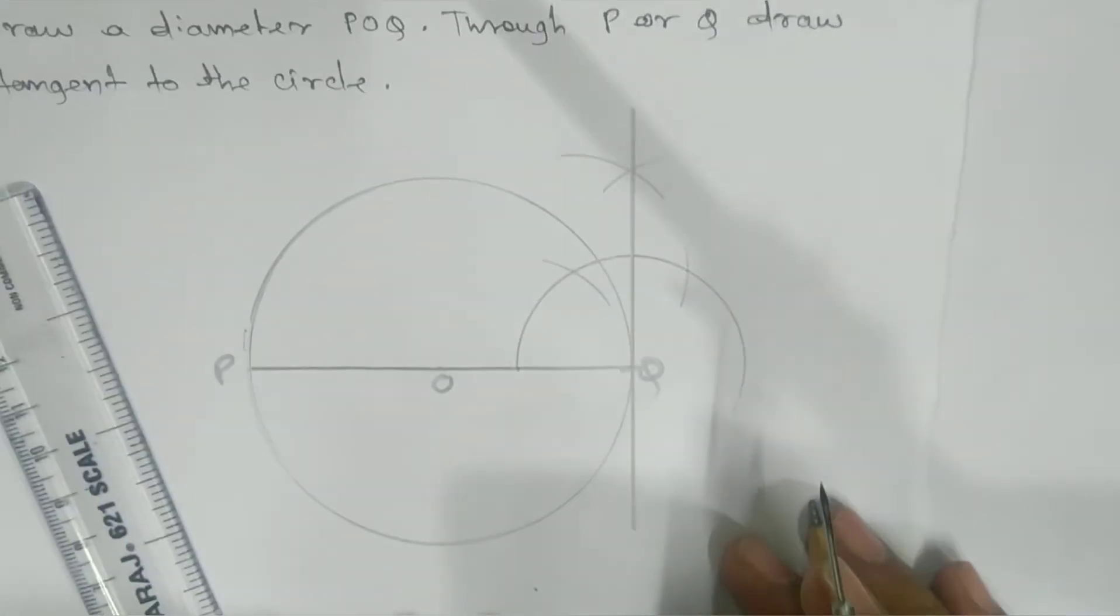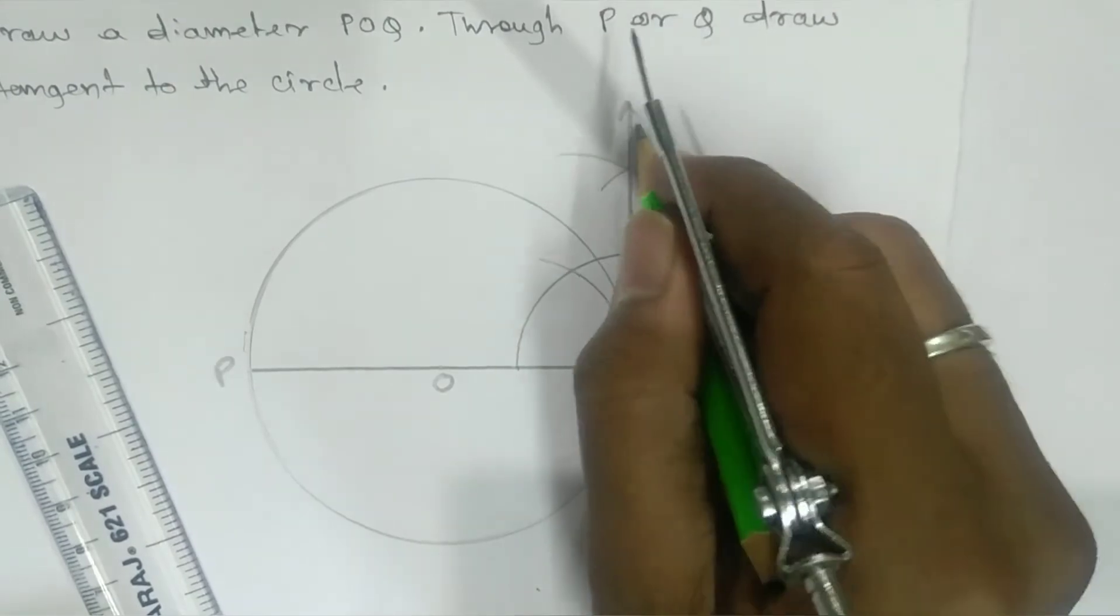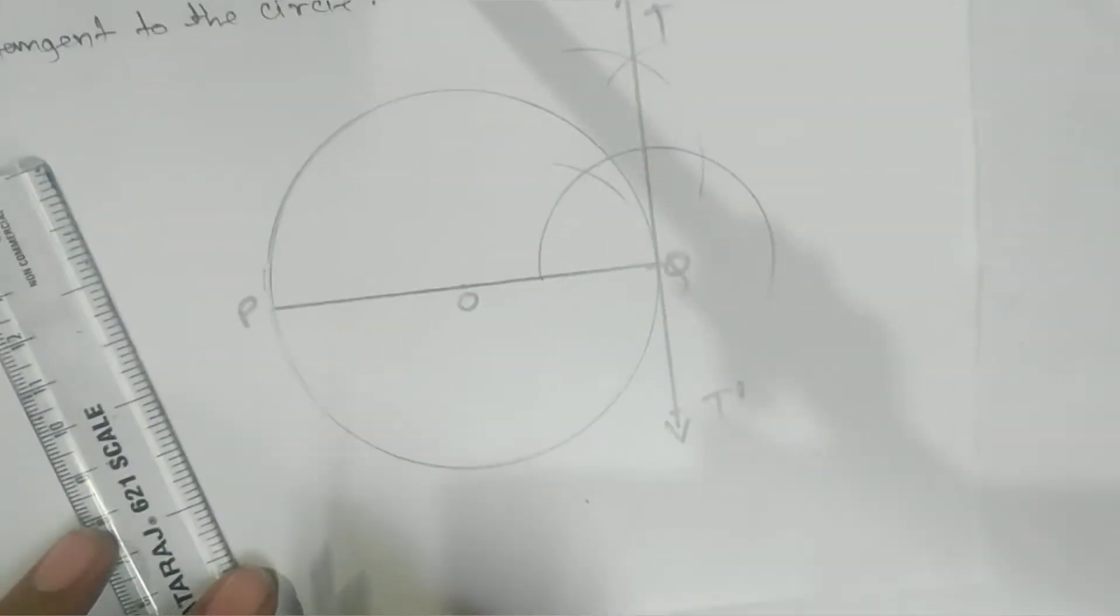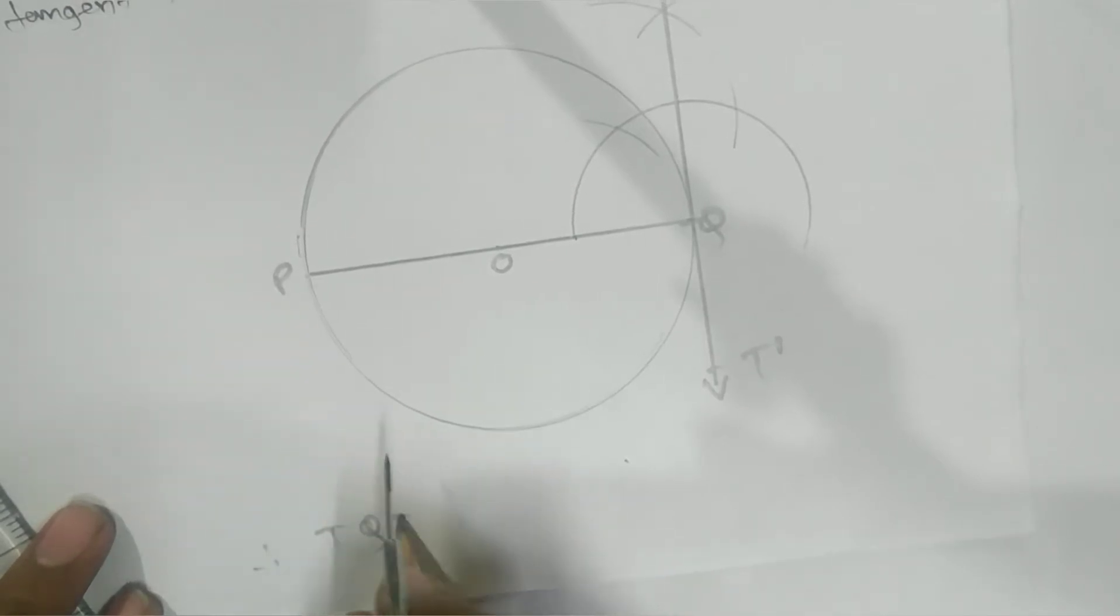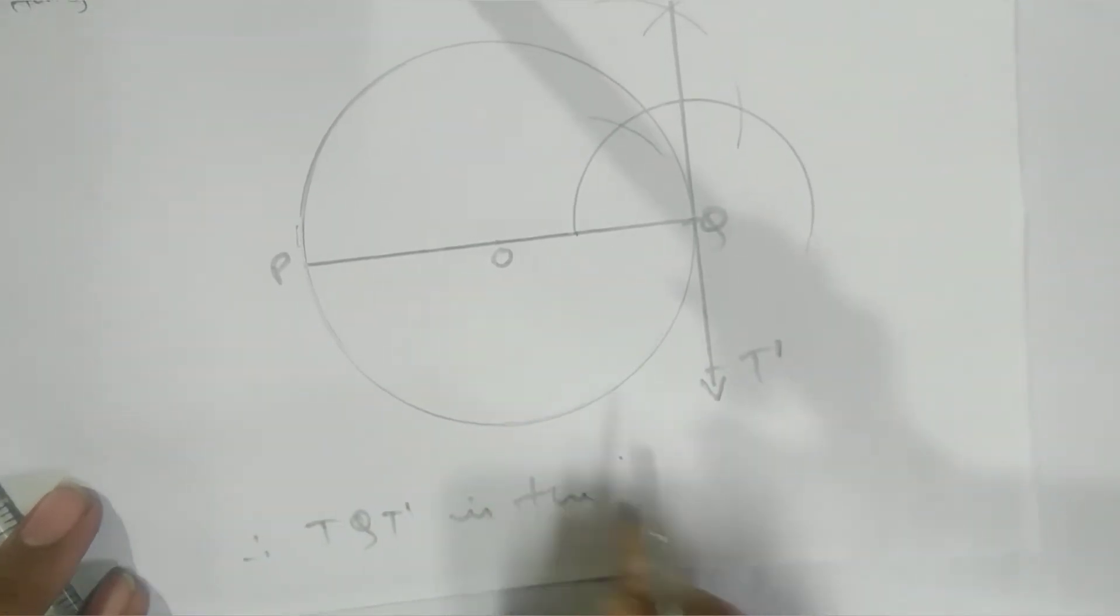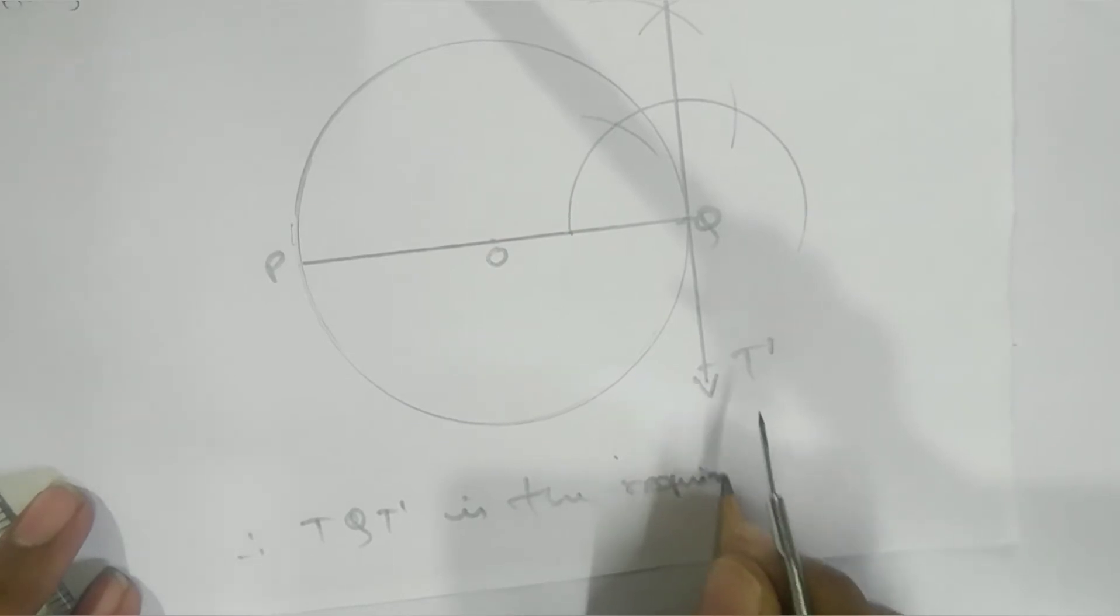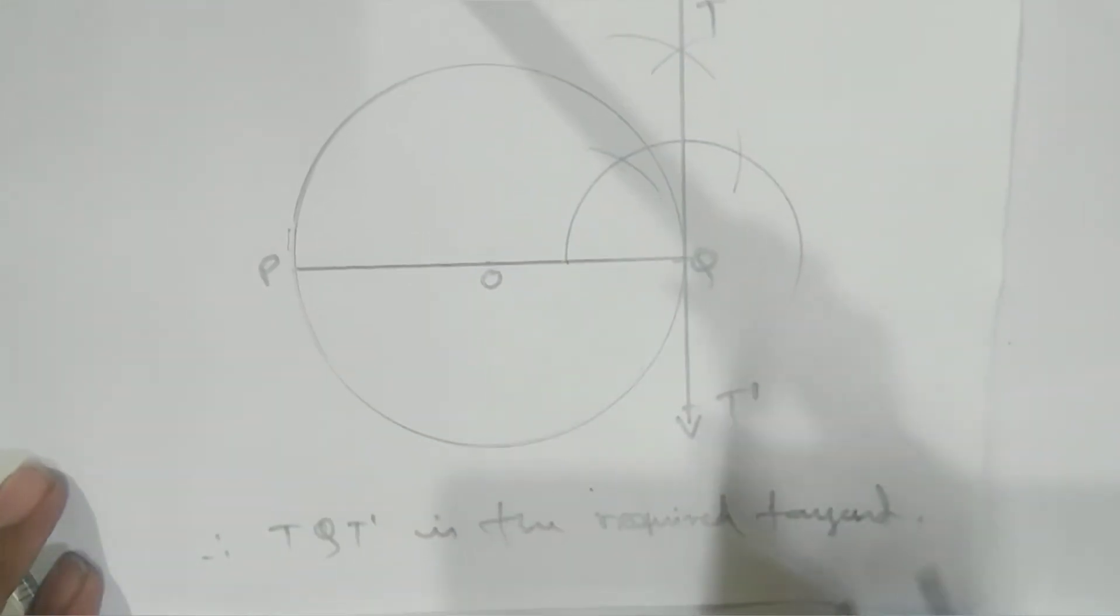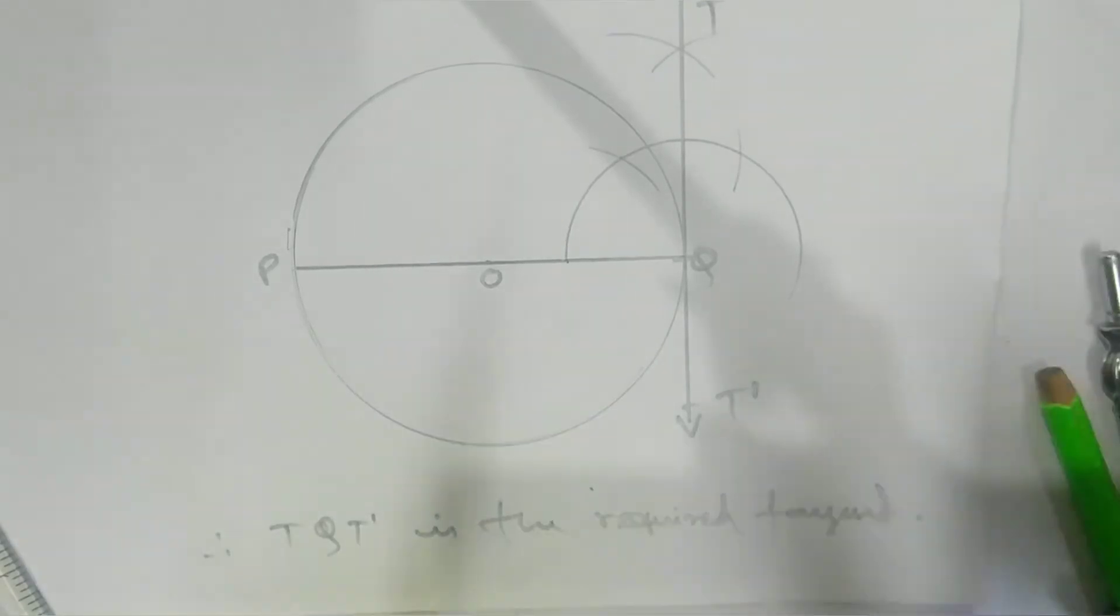This is our first problem. We'll give it a name: T and T prime. Therefore, TQT prime is the required tangent.